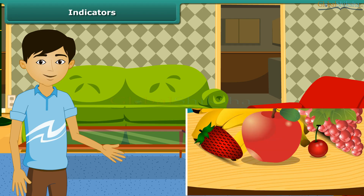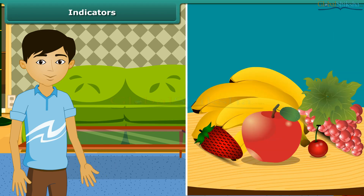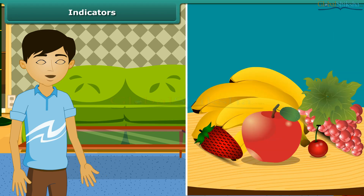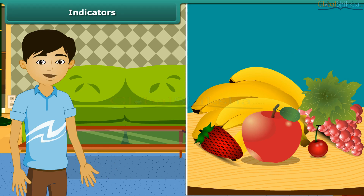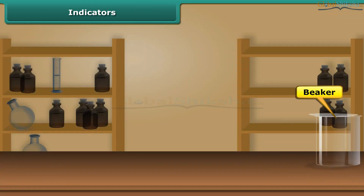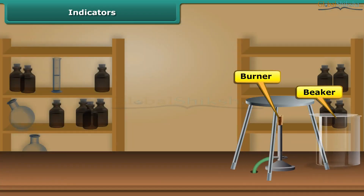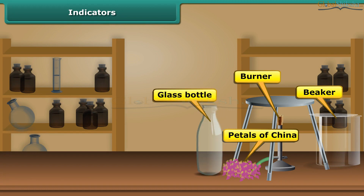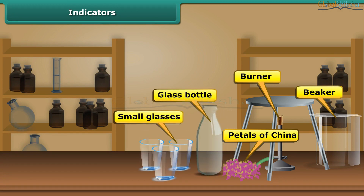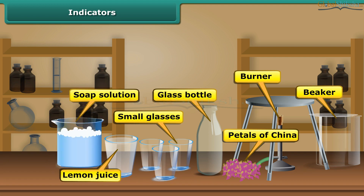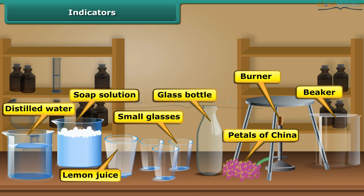Students, how can you find that a fruit is acidic or basic? You can easily test the acidic or basic nature of a substance by making a simple indicator solution at home. You will need a beaker, gas stove, petals of china rose, a clean glass bottle, three small glasses, lemon juice, soap solution, and distilled water.